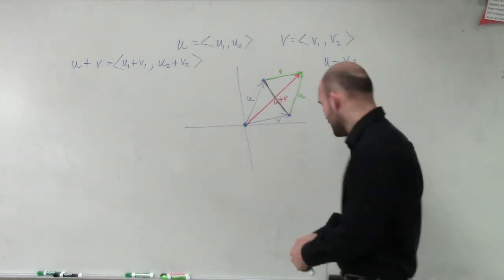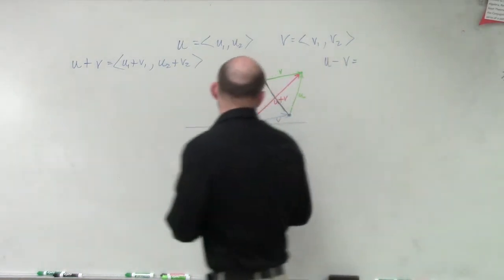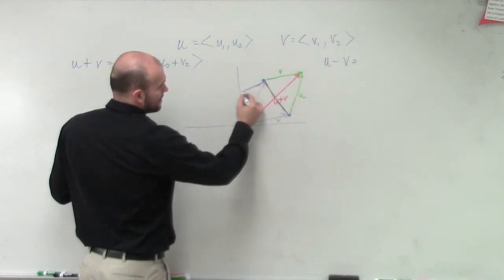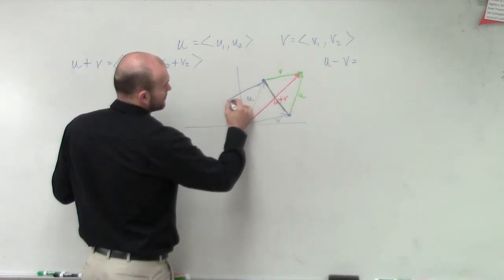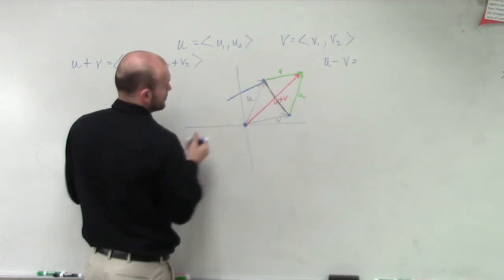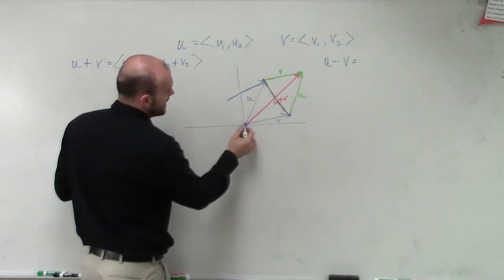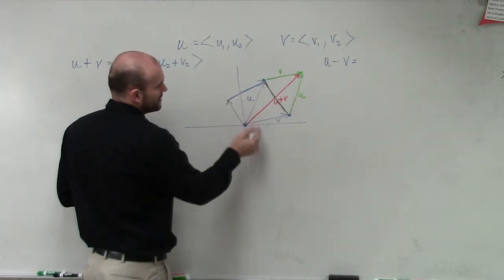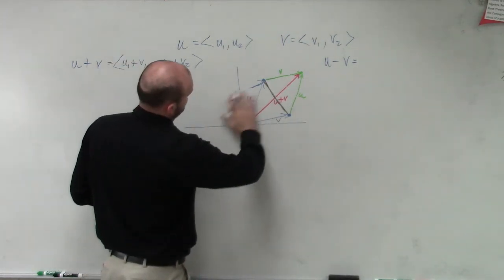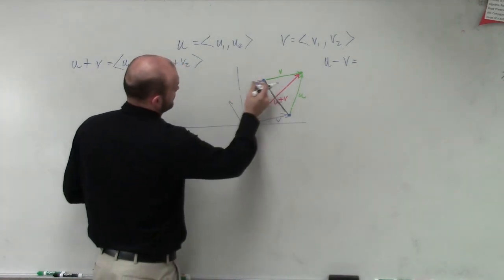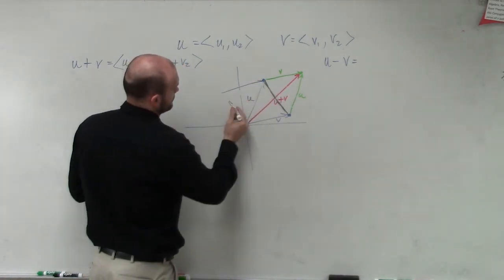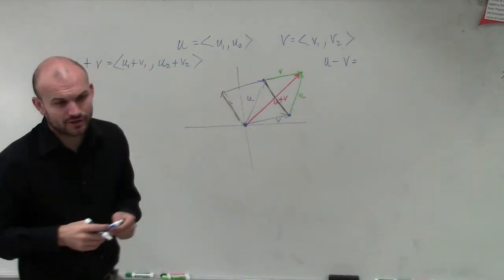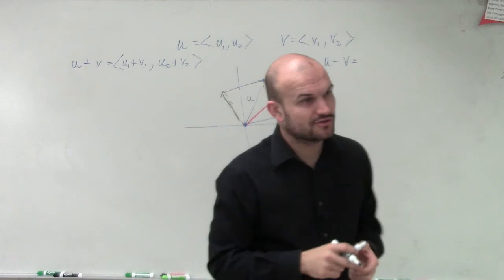And what we could do is you could even also transpose this, our v, take the end of this initial side, and then you can see now that again you have, well, that now you're going to have your u minus your v.